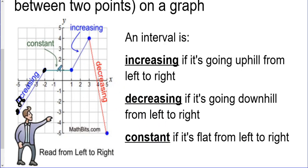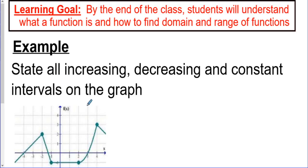There are three possibilities: increasing (going uphill), decreasing (going downhill), or constant (a flat section that is not going up or down). We're going to use interval notation — the square and round brackets — to describe these sections. You can also describe them using inequality notation if you prefer.